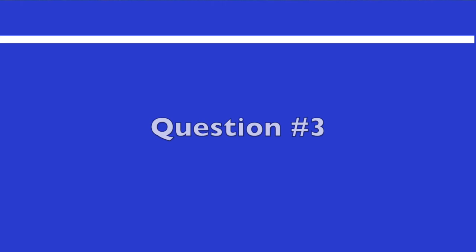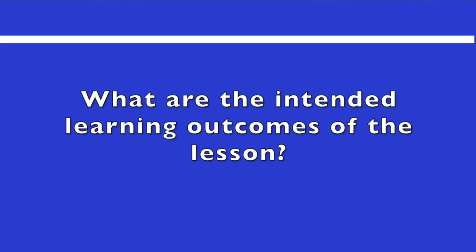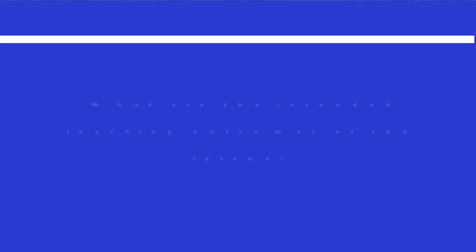Question number three: what are the intended learning outcomes of the lesson? This is the learning objectives that you want your students to achieve by the end of the lesson. This is quite an essential question.